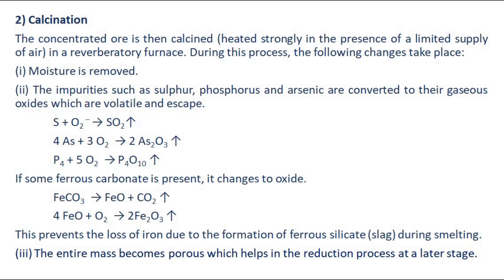Calcination: The concentrated ore is then calcined, heated strongly in the presence of a limited supply of air, in a reverberatory furnace. During this process, the following changes take place: moisture is removed; impurities such as sulfur, phosphorus and arsenic are converted to their gaseous oxides which are volatile and escape. If some ferrous carbonate is present, it changes to oxide. This prevents the loss of iron due to the formation of ferrosilicate, a type of slag, during smelting. The entire mass becomes porous which helps in the reduction process at a later stage.